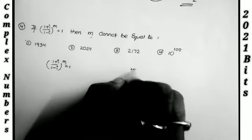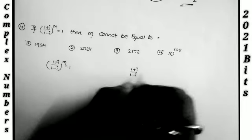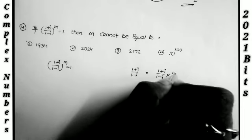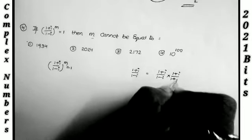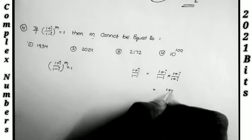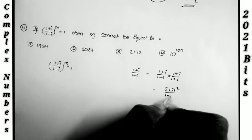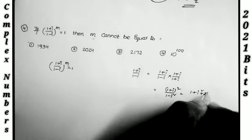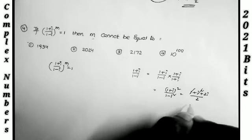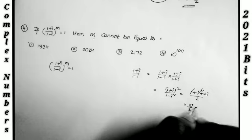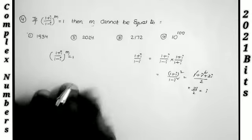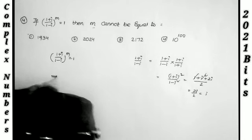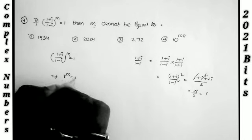This gives (1 + i)²/(1 − i²) = (1 + 2i + i²)/(1 + 1) = (1 + 2i − 1)/2 = 2i/2 = i. So the given condition becomes i^m = 1. For i^m = 1, m must be a multiple of 4.